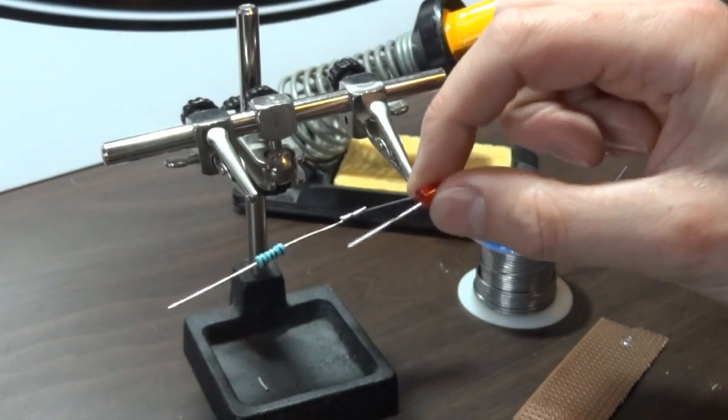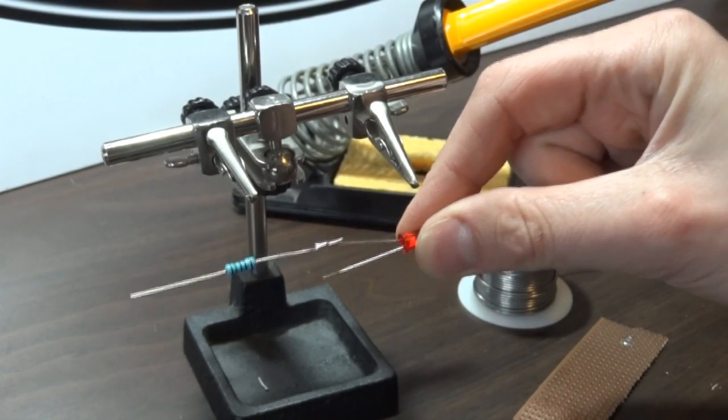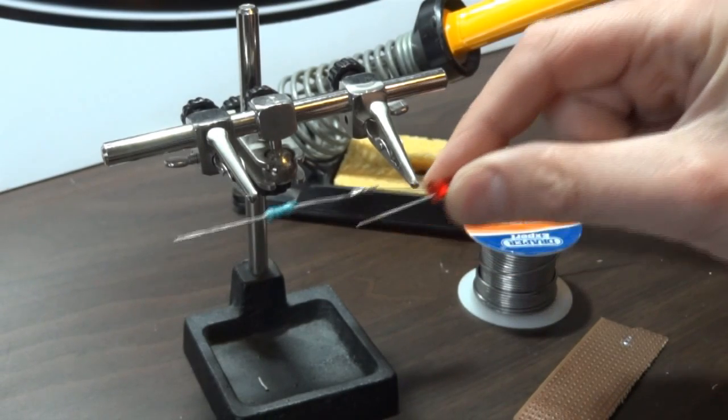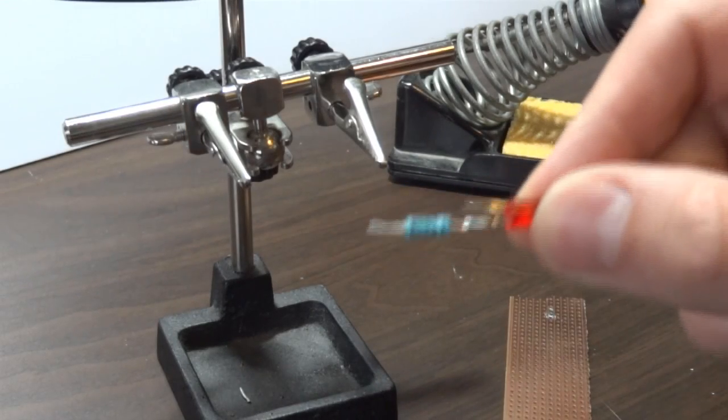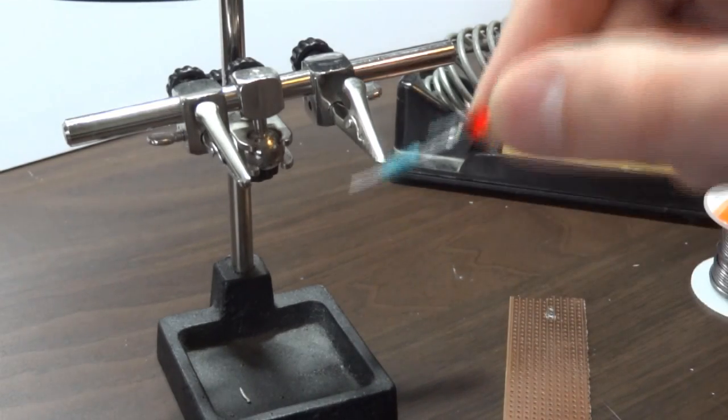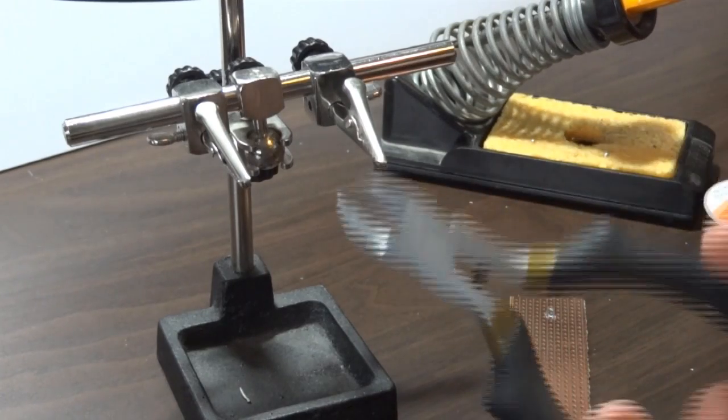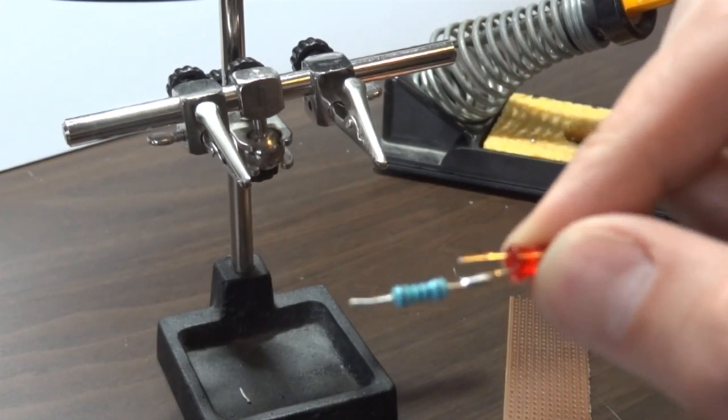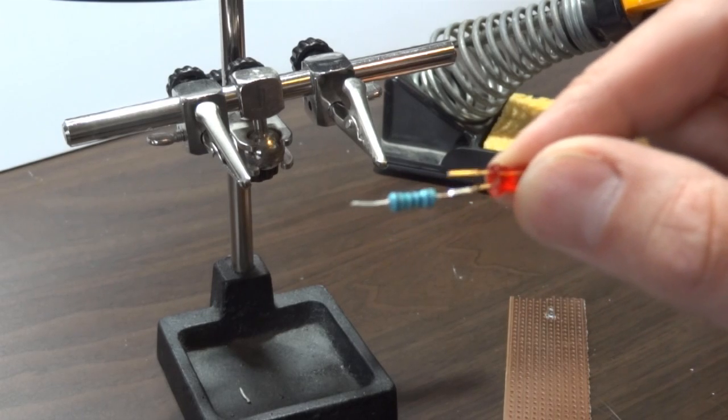So I probably should have trimmed the legs down for those, so I'm just going to redo that, and then we'll attach some wires to it. So I've just put that back together with the legs trimmed down, and I just cut those down with a pair of normal cutters so that it's much shorter altogether. Now I'm going to attach a piece of wire to it.